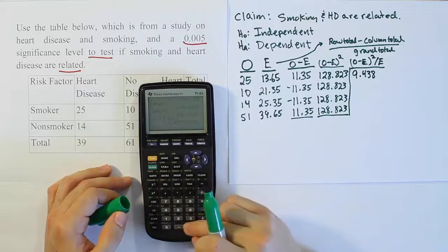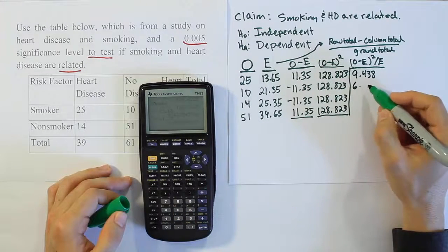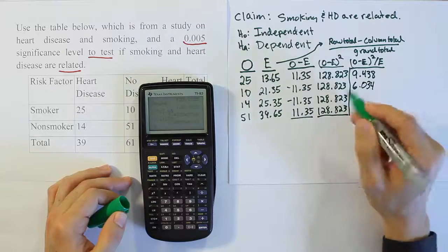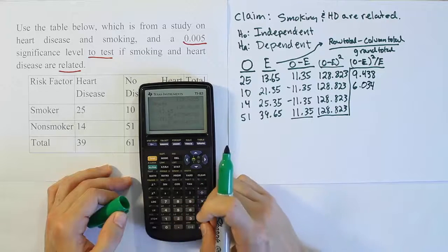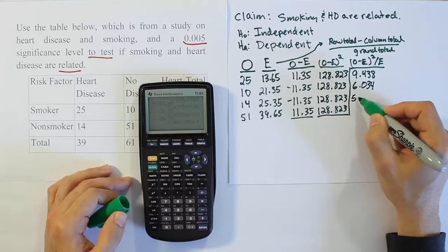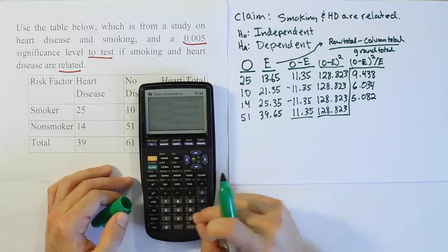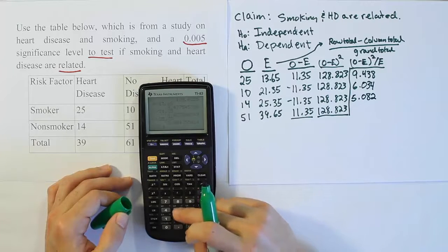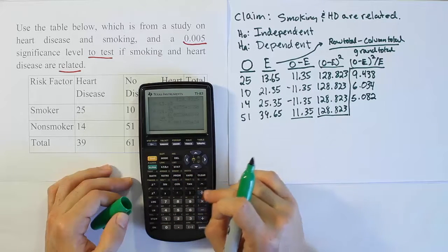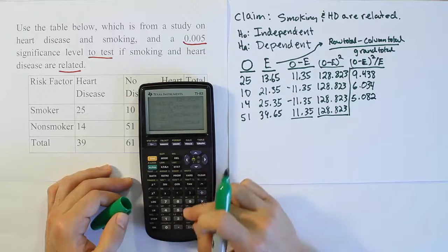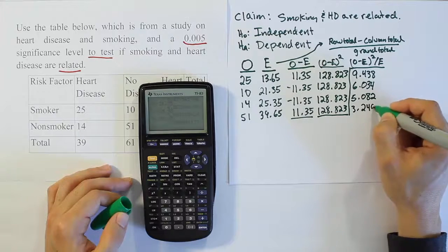I'll repeat the process. That 128 number divided by 21.35, I get 6.034. That 128 number again divided by 25.35, I get 5.082. And then lastly, we'll do 128.823 divided by 39.65, and we'll get 3.249.